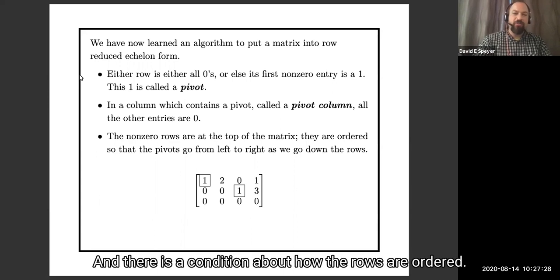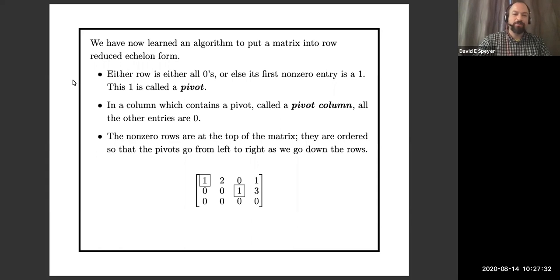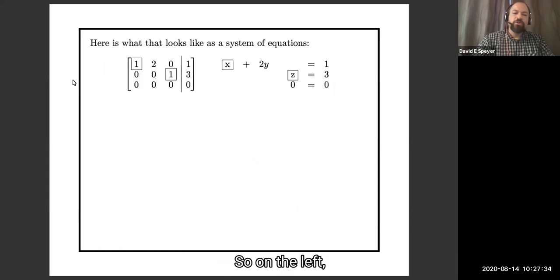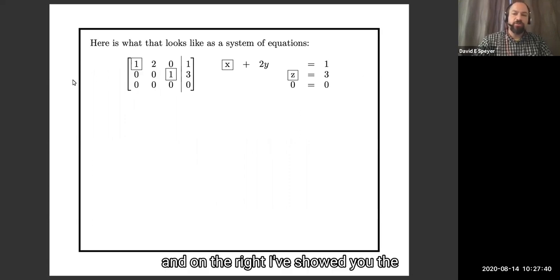And there's a condition about how the rows are ordered. You can definitely go back to the previous video if you want me to talk about this more. So on the left, I've showed you a matrix in row reduced echelon form, and on the right, I've showed you the corresponding system of linear equations, and the pivot variables are boxed.